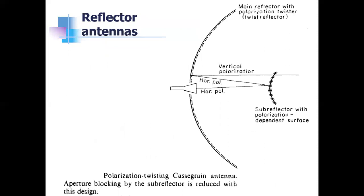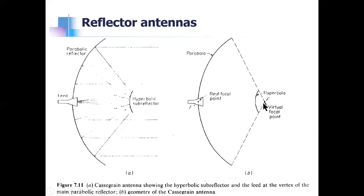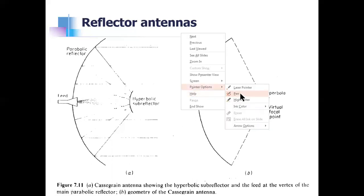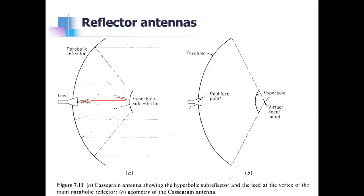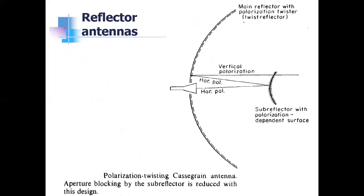Another design is the polarization twisting Cassegrain antenna. The motivation for this design is that, because of the subreflector, there is still some aperture blockage. Radiation from the feed hitting the primary reflector and reflecting back toward the subreflector cannot pass through it, so aperture blockage remains. The way to reduce this in the Cassegrain design is to use a polarization twist reflector.